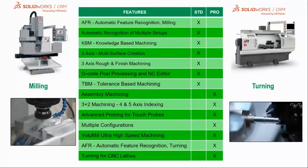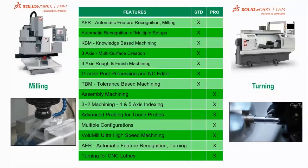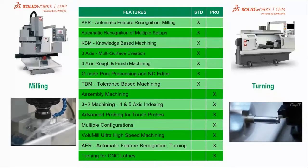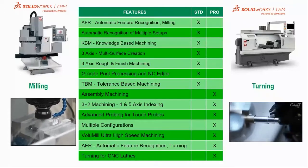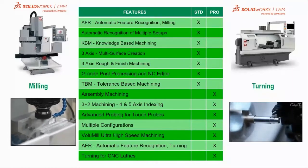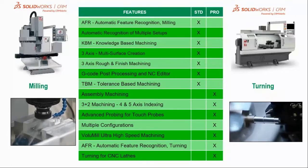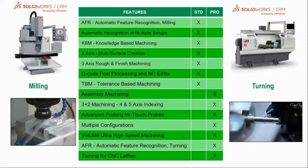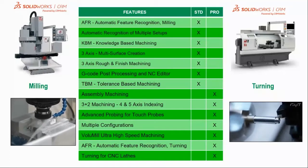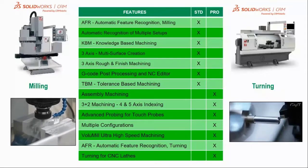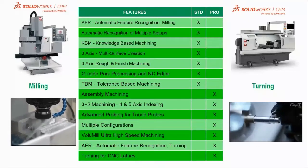Knowledge-based machining, or KBM, provides users with the ability to create machining operations with all the tools, speeds, feeds, and other machining parameters included automatically. SOLIDWORKS CAM can create three-axis multi-surface features and includes the ability to rough and finish machine them. The ability to post-process tool paths and generate G-code is also included, along with an NC editor powered by SIMCO. SOLIDWORKS CAM also includes tolerance-based machining, or TBM, which uses digital manufacturing technology to read SOLIDWORKS MBD data and automatically select the correct machining strategies to meet tolerance and surface finish requirements.